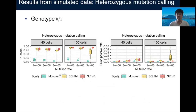Now let's move on to variant calling results. The first thing we want to compare is heterozygous mutation calling, where the genotype is 0/1. On the left panel, we compare with Monovar and SciΦ in terms of F1 score. Both SciΦ and SCIF outperform Monovar by a large margin. If the mutation rate is increased, SCIF also outperforms SciΦ. On the right panel is false positive rate. Monovar has a relatively low false positive rate, usually below 0.5%. For SCIF, its false positive rate is slightly higher but always below 1%.